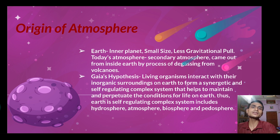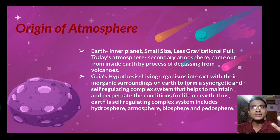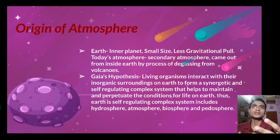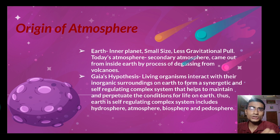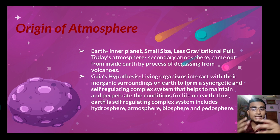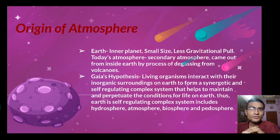The Gaia hypothesis regarding the origin of atmosphere states that the many living organisms interact with each other and also with the inorganic substances of their surroundings to form a synergy, creating a complex system that can self-regulate. So: living organisms interacting with their inorganic surroundings to form a synergistic and self-regulating complex system — this is the Gaia hypothesis. It helps promote life on Earth, which is why we say Earth is a self-regulating complex system.